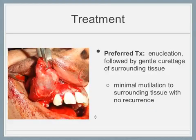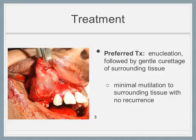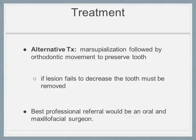Enucleation of the well-encapsulated lesion followed by gentle curettage of the surrounding tissue allows for minimal mutilation with no recurrence. An alternative treatment is marsupialization followed by orthodontic movement to preserve the tooth. However, if the lesion fails to decrease in size or continues to grow, it must then be removed. The best professional referral for enucleation is an oral and maxillofacial surgeon, given the extensive nerves and blood vessels in that area, and an orthodontist for movement of the tooth.